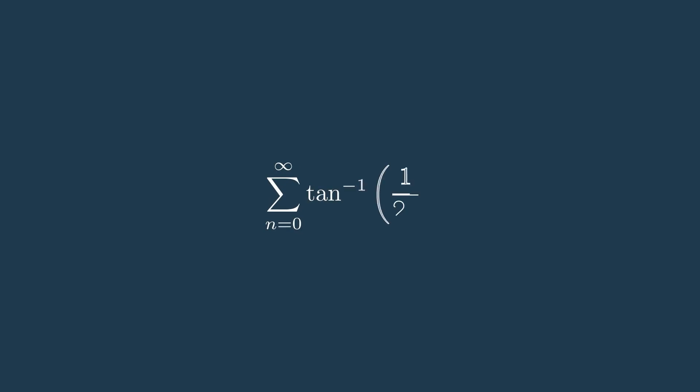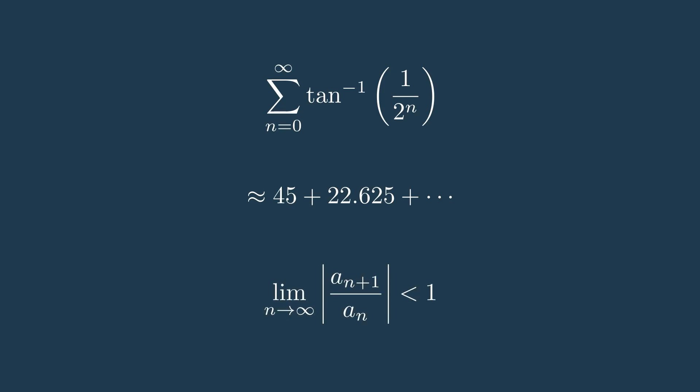If we write out our angle series as a summation, it looks like the sum from n equals 0 to infinity of the inverse tangent of 1 over 2 to the n, with the terms looking like 45, then 22.625, and so on. One way we can know if this series converges is by looking at the ratio of the next term in this series over the previous term as we approach infinity. If that ratio is less than 1, it means the next term is less than the previous term, meaning the terms are getting smaller even as we go all the way to infinity, so it must converge.